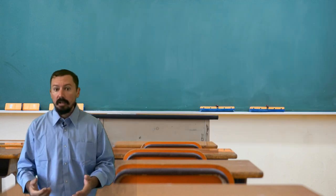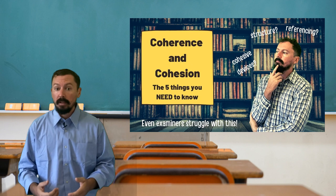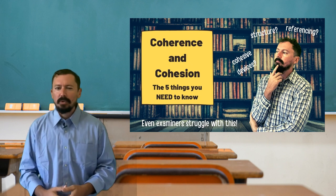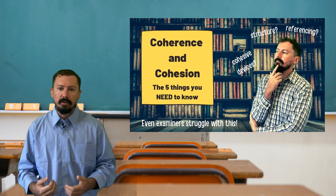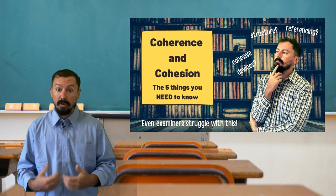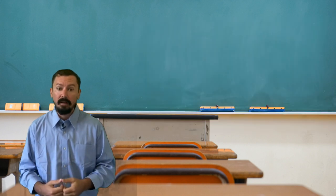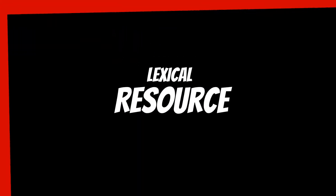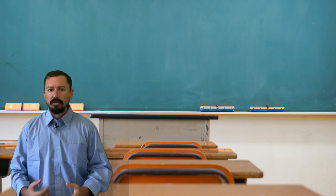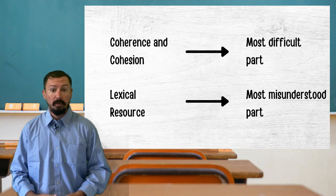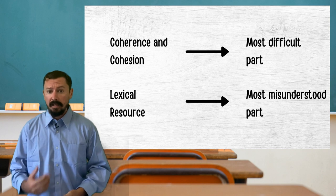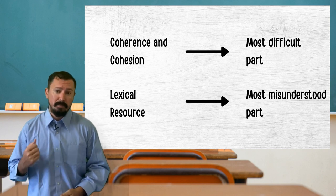In fact, the band descriptors clearly state that overusing cohesive devices would cause your score for this section to be around band 6 or at most band 7. If you want to understand coherence and cohesion fully, check out the video I made a few weeks ago — it goes into a lot of detail. Whilst coherence and cohesion is probably the most difficult part of the band descriptors, lexical resource is surely the most misunderstood.